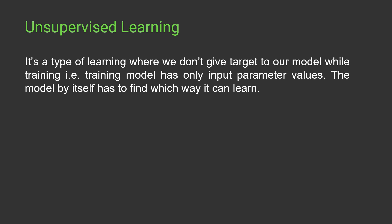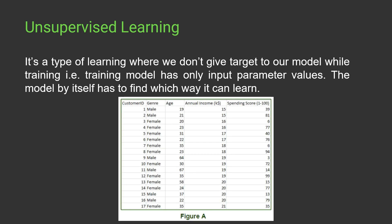You might be thinking: how can we train our machine learning models without labels? Don't worry — you will understand this concept as we move further in this course. In unsupervised learning, we have no labels. For example, we are given a customer dataset with customer ID, gender, age, annual income, and spending score, and we have to predict something — but we don't know what to predict, so there is no label.